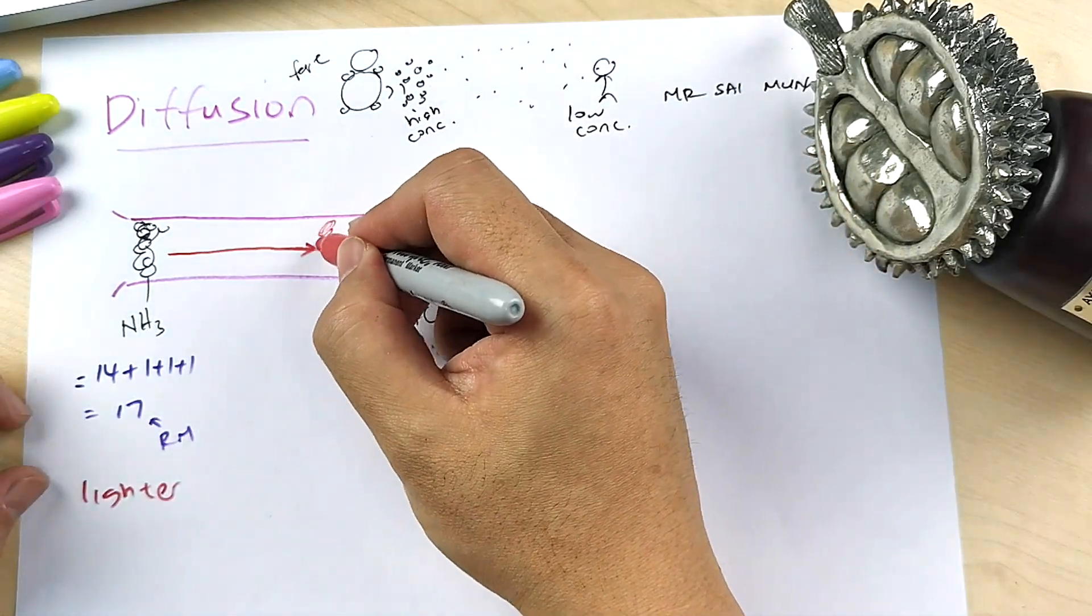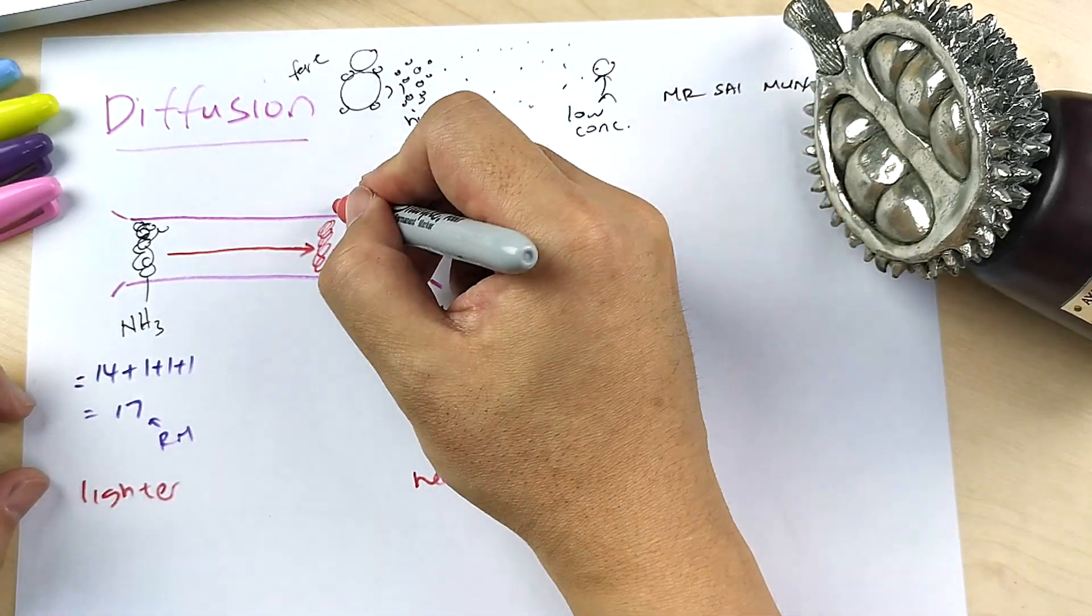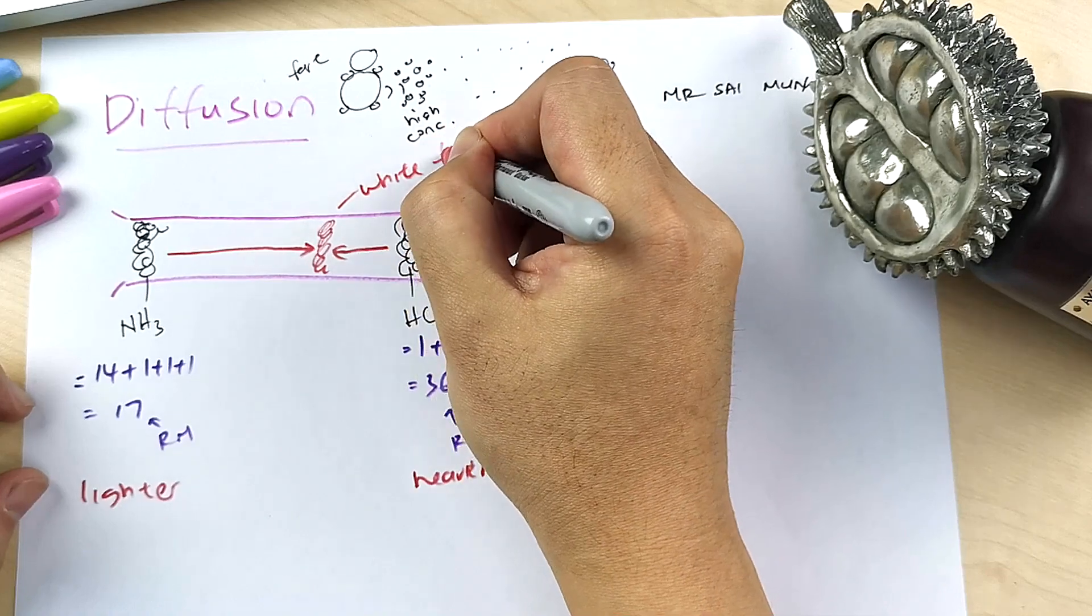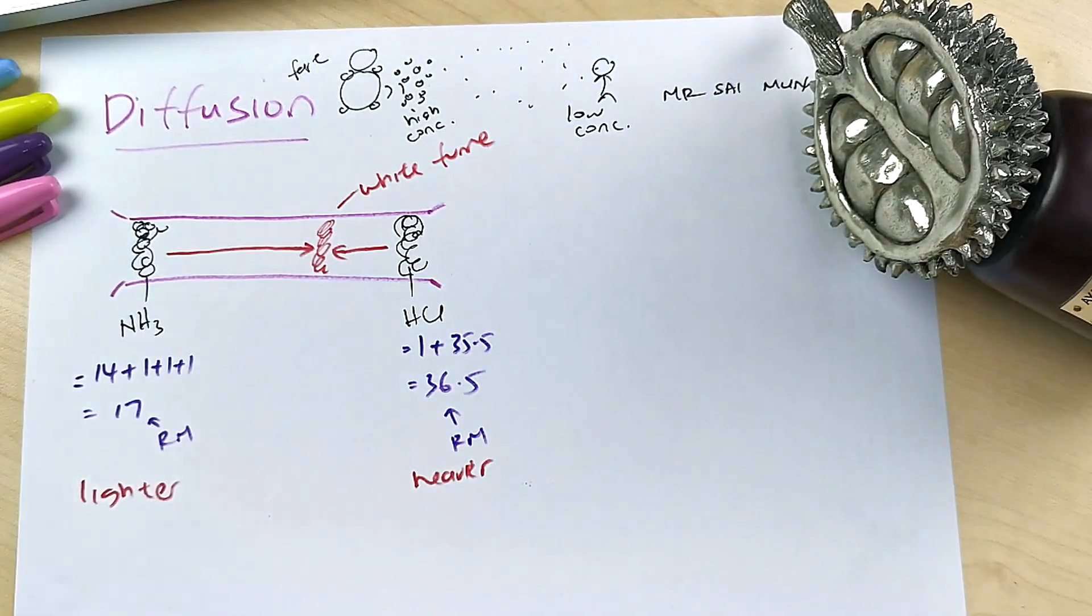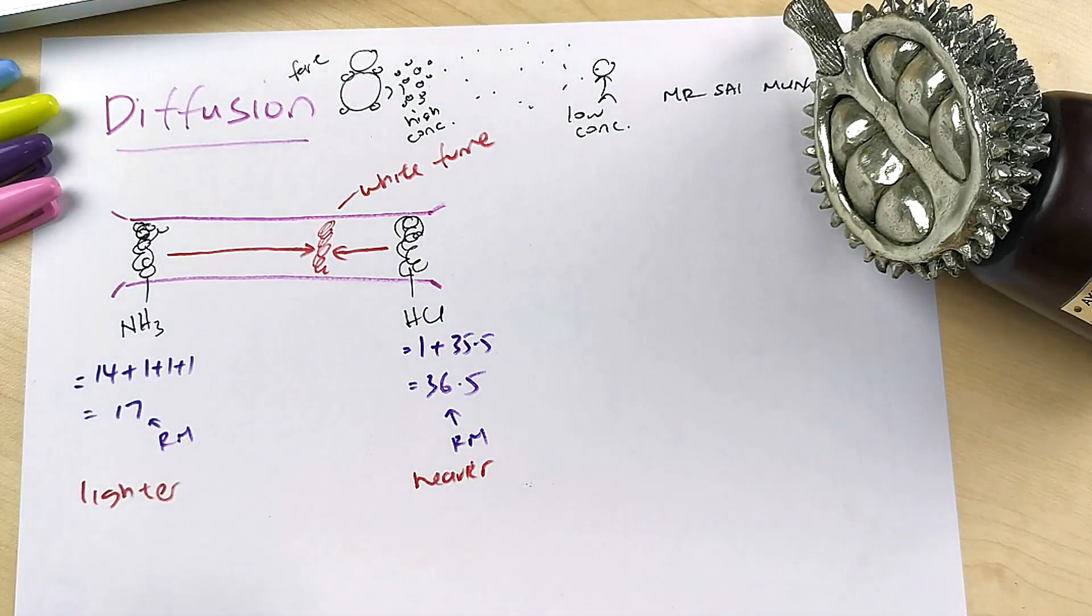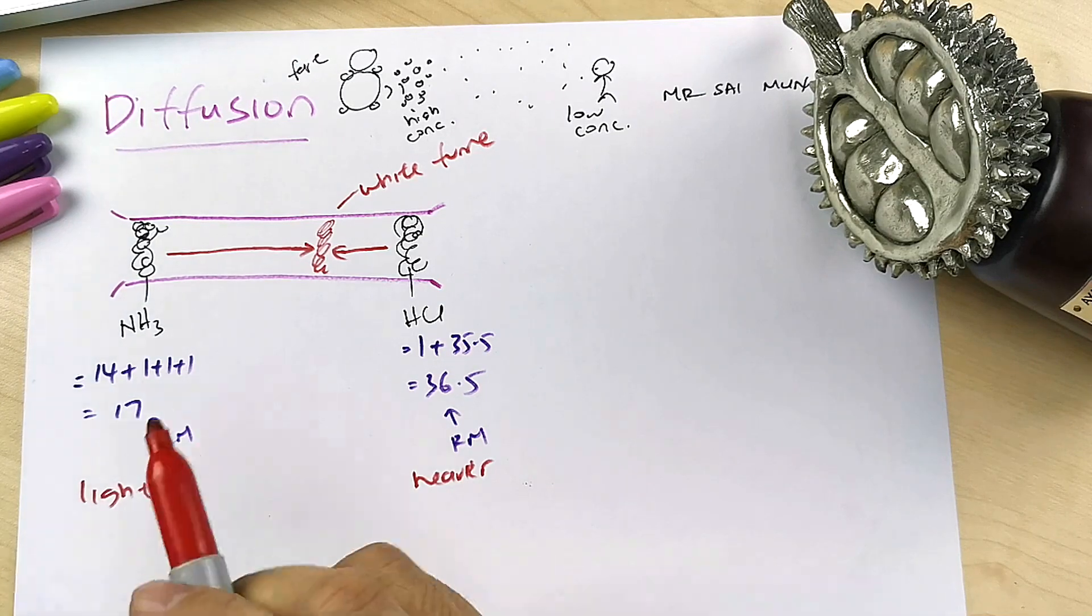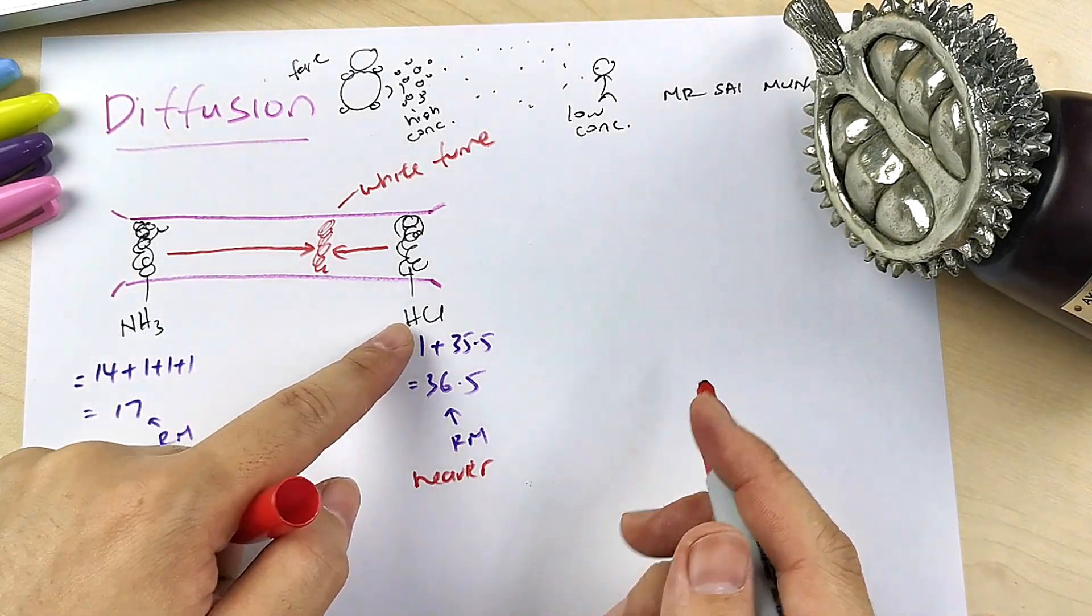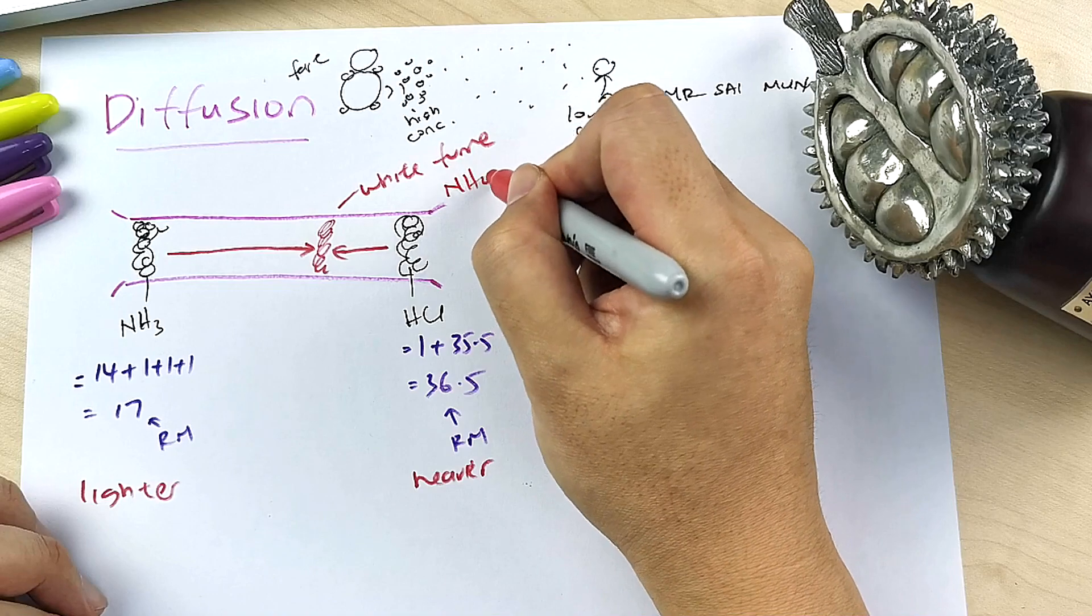So when they combine together, this will be formed, so this will be a white fume. If they ask what is the observation, you see a white fume. Then what is the white fume? Very easy: NH3 plus HCl becomes NH4Cl, ammonium chloride.